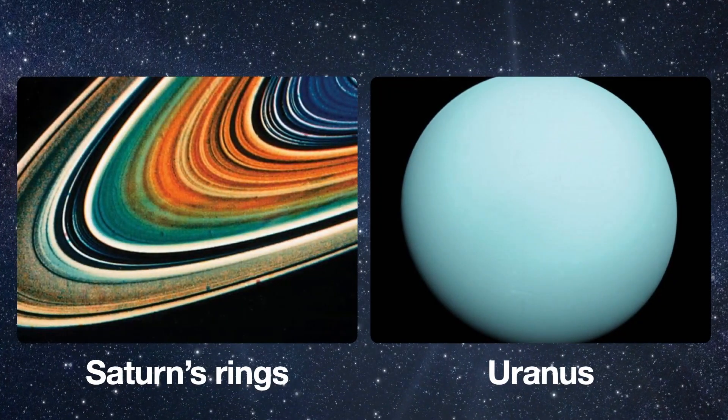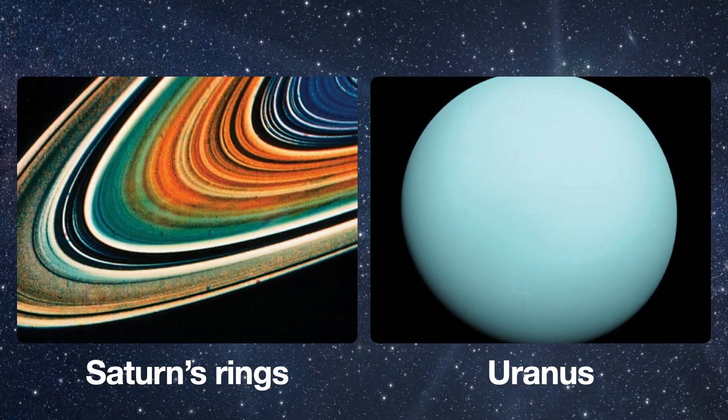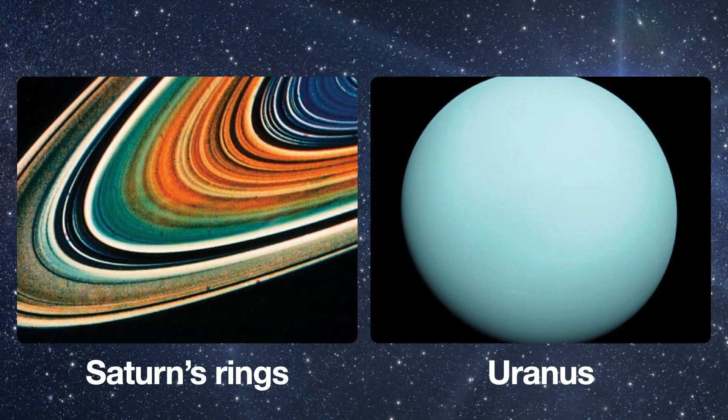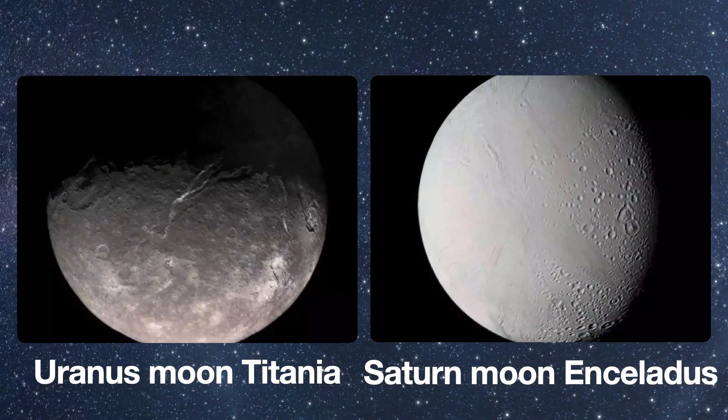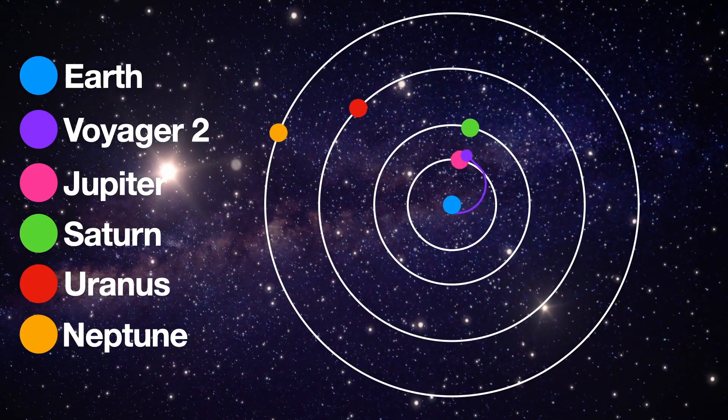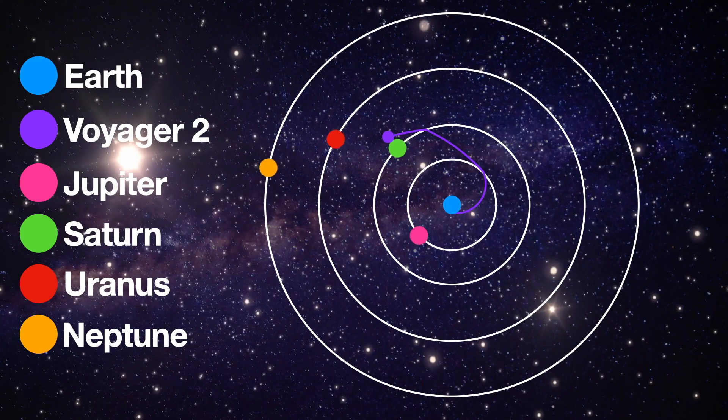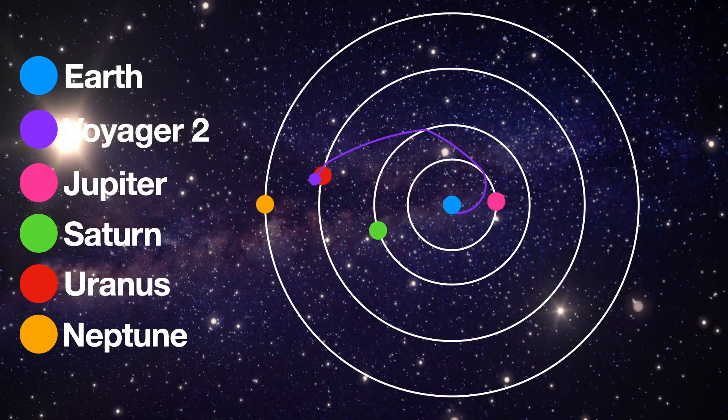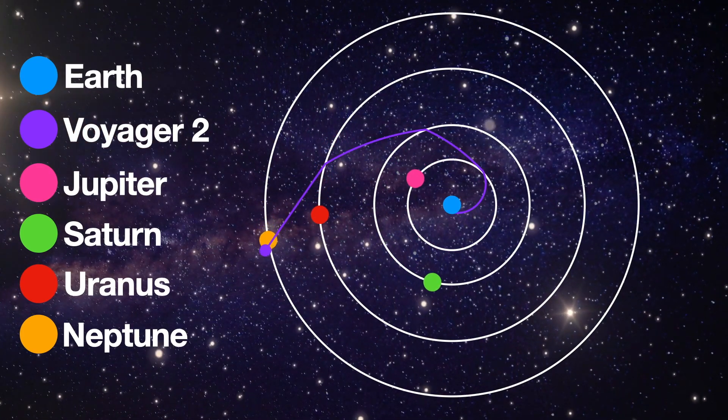During its tour of the outer solar system, Voyager 2 recorded numerous accomplishments. It visited Jupiter, Saturn, Uranus, and Neptune and remains the only spacecraft to visit the ice giants. Because Voyager 1 explored Titan, Voyager 2 moved on to Uranus and Neptune after Saturn using gravitational assists from each planet along the way.